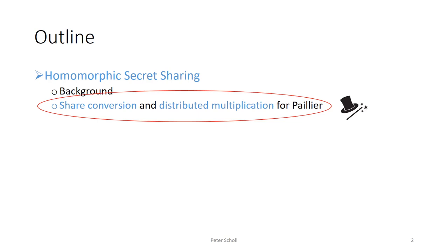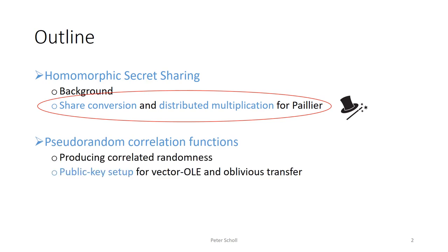We'll use this to construct a distributed multiplication protocol for homomorphic secret sharing. Later I'll show how to use the same share conversion procedure to build a different object called the pseudorandom correlation function. This can be used to produce a large quantity of correlated randomness used in two-party or multi-party computation protocols, and our constructions have features like a simple public key setup. We can use these to build either vector OLE correlations or oblivious transfer correlations.